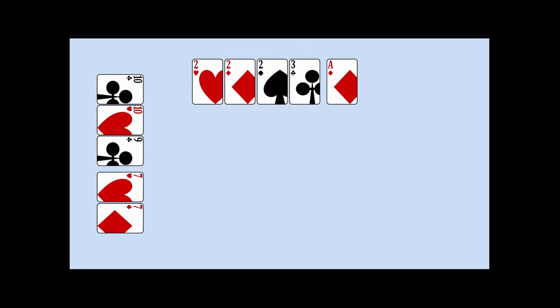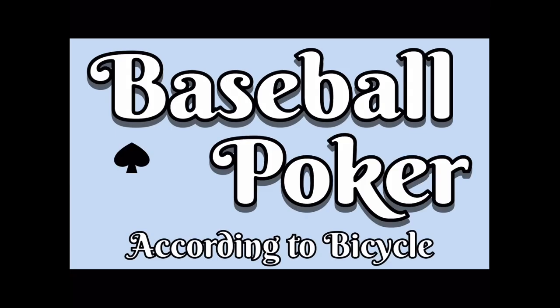The winner collects the pot. Collect the cards and pass the deal to the left. Ante in and continue playing. And that is how you play Baseball Poker according to Bicycle.